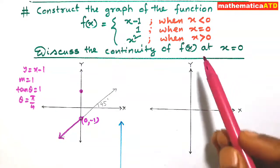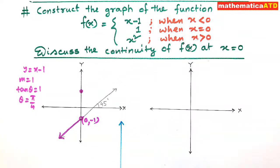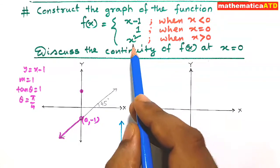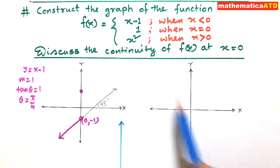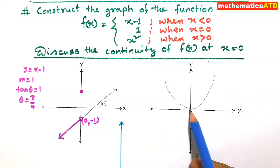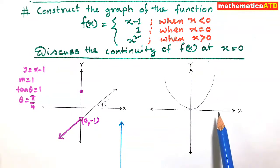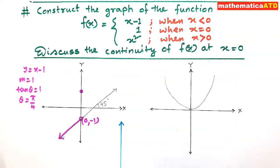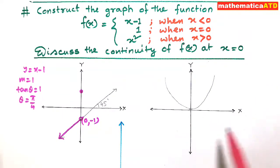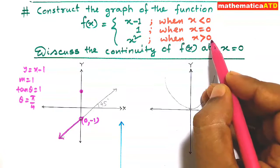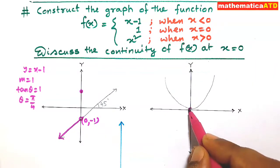For the third piece, f(x) = x squared. This is actually a parabola and its vertex is at the origin, so it will touch the origin. The important fact is its domain is x is greater than 0. There is no equality sign, meaning x is not equal to 0, so we have to discard the origin. The curve is drawn only for x greater than 0.